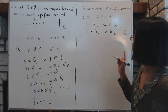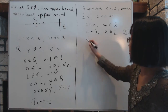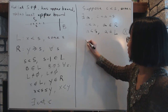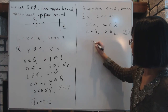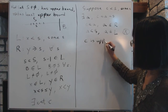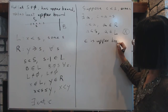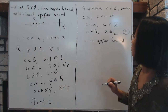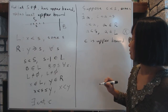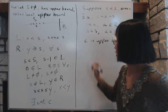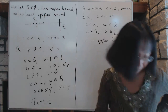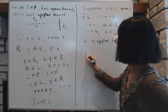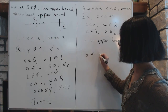That's a contradiction, and it proves that c is an upper bound. Now, that still hasn't proved that c is the least upper bound. To show that c is the least upper bound, suppose a certain number b is less than c.